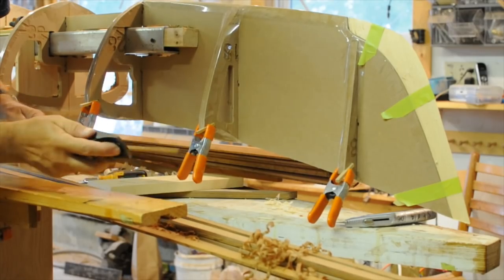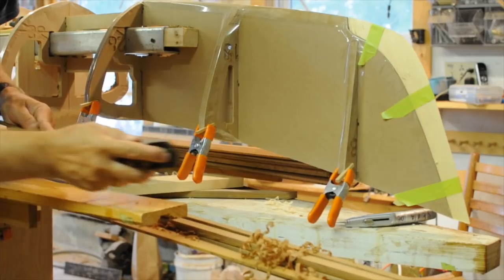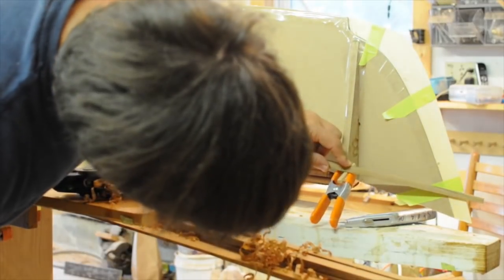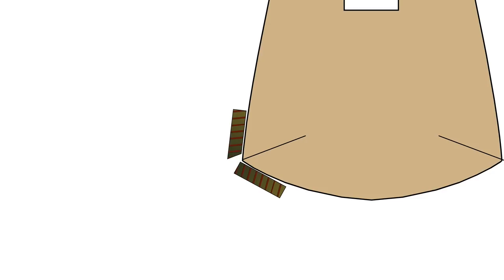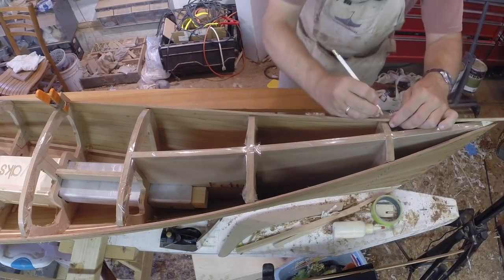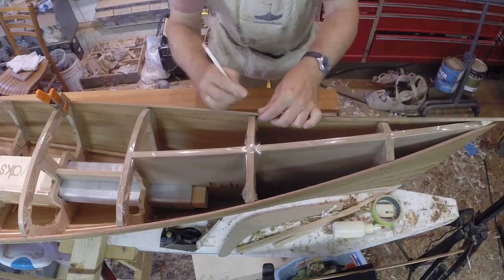Back in Episode 3, I planed a bevel along the edge of the first strip I installed on the hull. The goal was to eventually create a miter between the hull and deck for a smooth, tight seam. Now that I'm working on the deck, it's time to create the matching first strip for it.